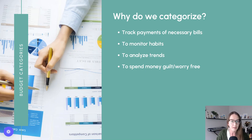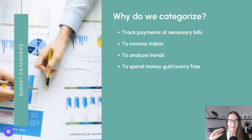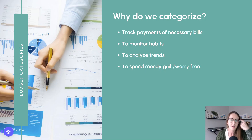The first reason is to track payments of necessary bills — make sure your bills are getting paid on time. That's why we have categories like rent, insurance, and utilities. We want to see that those payments have been made and nothing's been missed. It's really good for a budgeting app to make sure that those payments do not get missed.